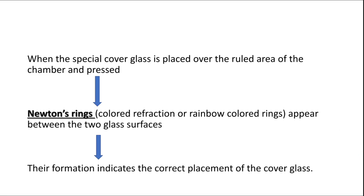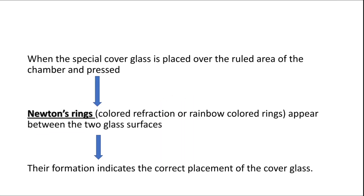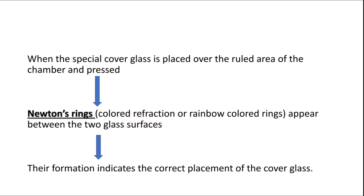An important question is: how can you confirm that the thick cover glass is placed correctly over the Neubauer chamber? Whenever you place the cover glass over the ruled area and press it, a colored refraction — a rainbow-like multi-colored ring — will form between the two glass surfaces. This is known as Newton's ring, and its formation indicates that the placement of the cover glass is correct.